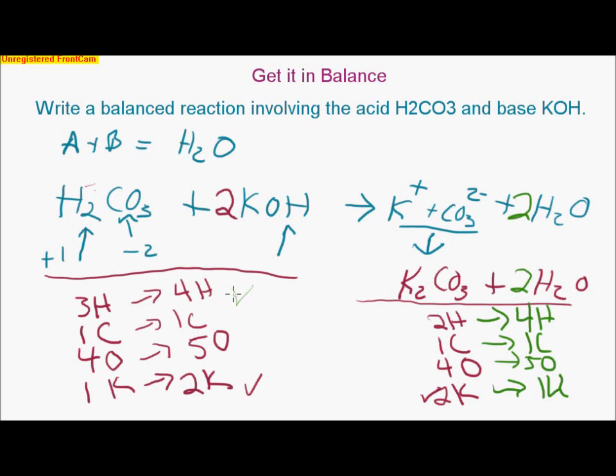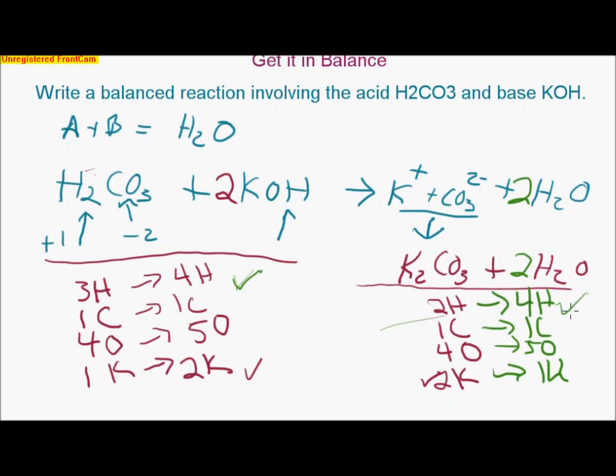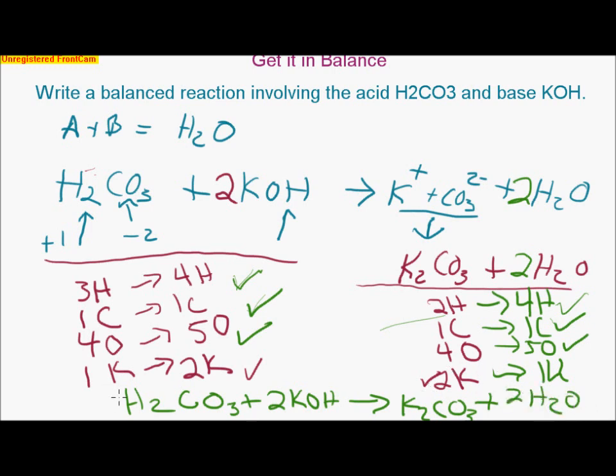So 4 H's, 4 H's, 1 C, 1 C, 5 oxygens and 5 oxygens. Yay, we have successfully gotten a balanced equation, which is our final product: H2CO3 plus 2 KOH yields K2CO3 plus 2 H2O, and that is our balanced equation.